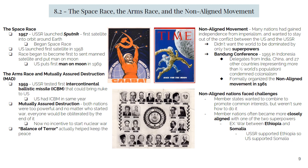This threat to the existence of humanity and civilization as we know it became known as Mutually Assured Destruction, or MAD. The idea was that if nuclear war did occur, it was a certainty that neither the USSR nor the USA would survive — that probably very few people at all would survive. This was actually one of the main reasons nuclear war has never occurred. This balance of terror — the potential for both sides to completely and simultaneously destroy the other — was a large part of what prevented the Cold War from becoming a hot war.